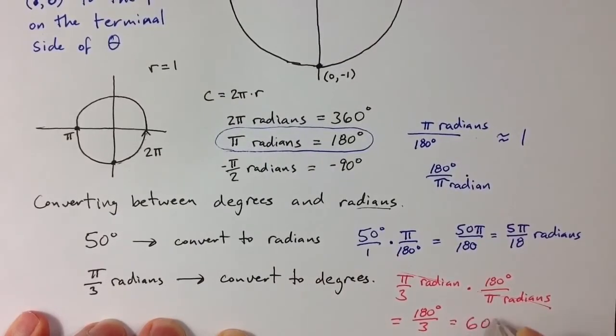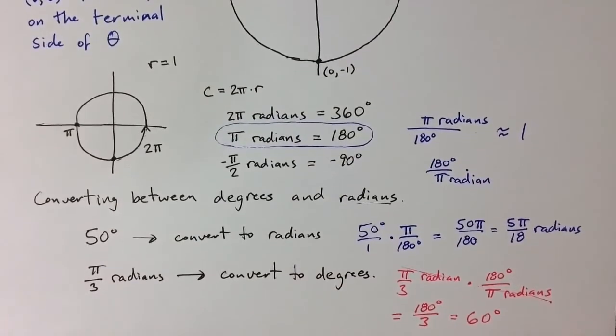In fact the π cancels in this instance. And so that's the same as 180 degrees over 3, or more simply, 60 degrees. So π over 3 corresponds to 60 degrees.